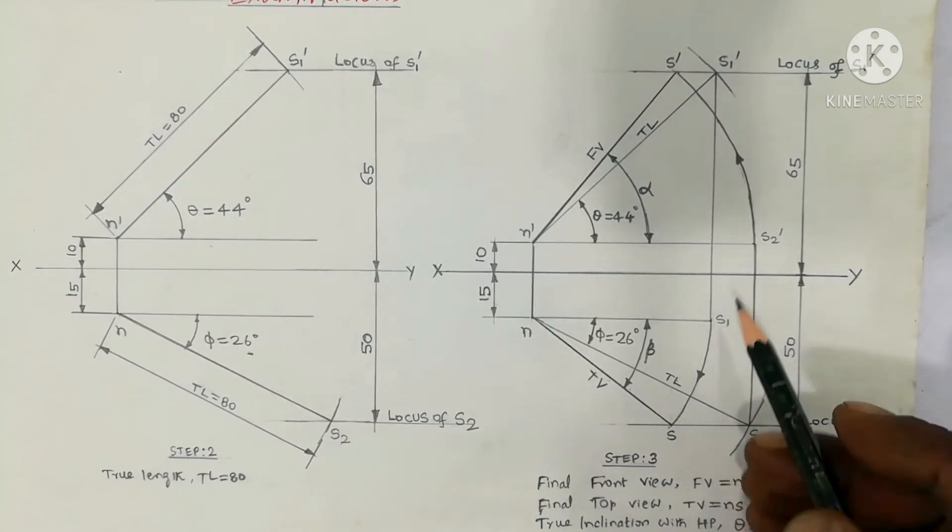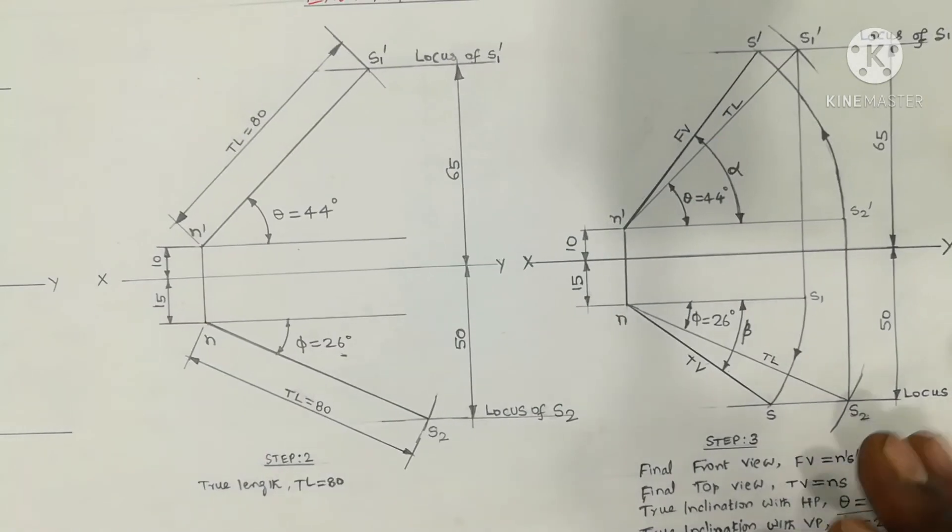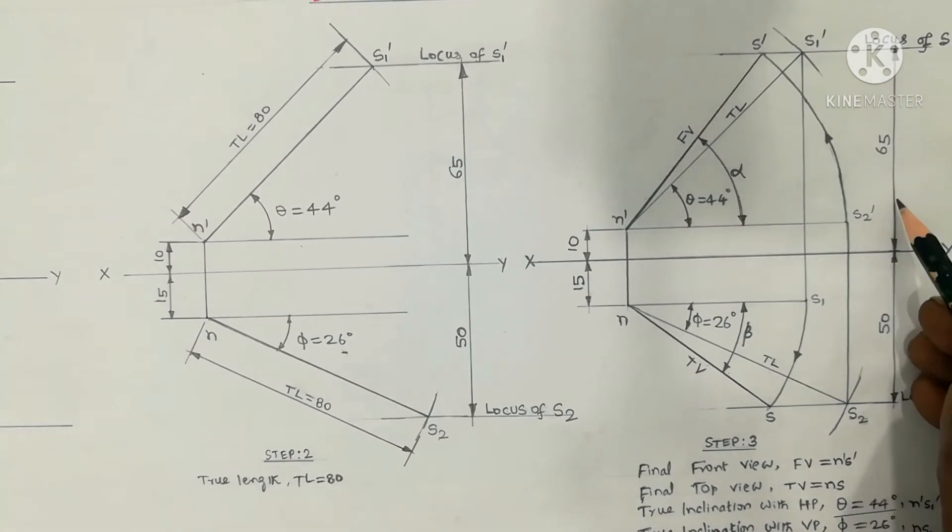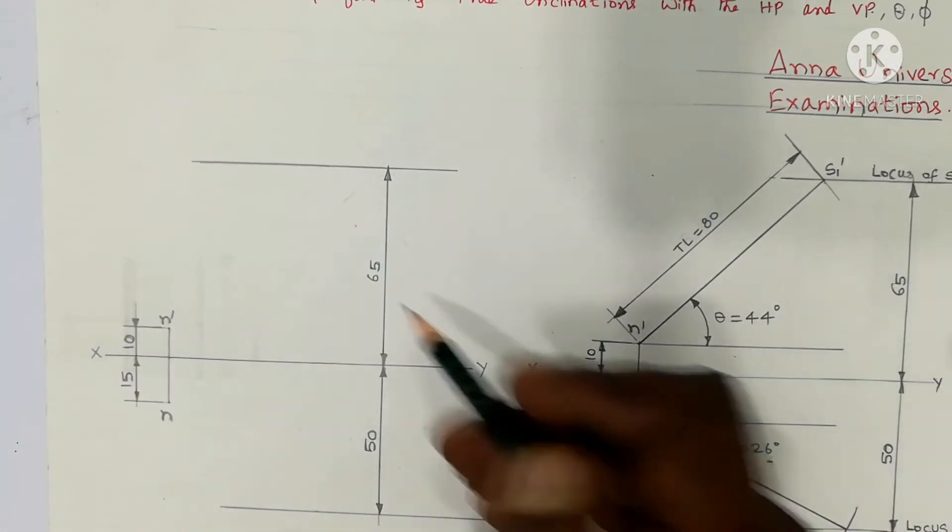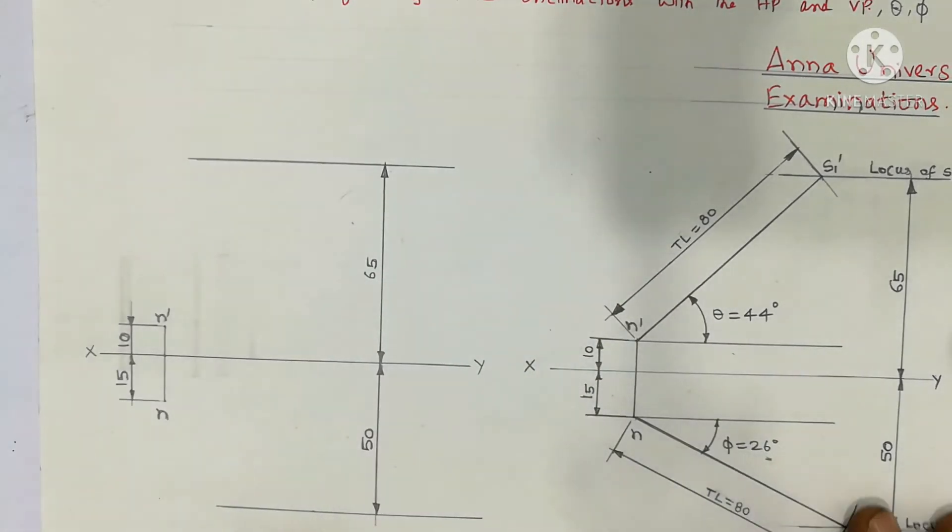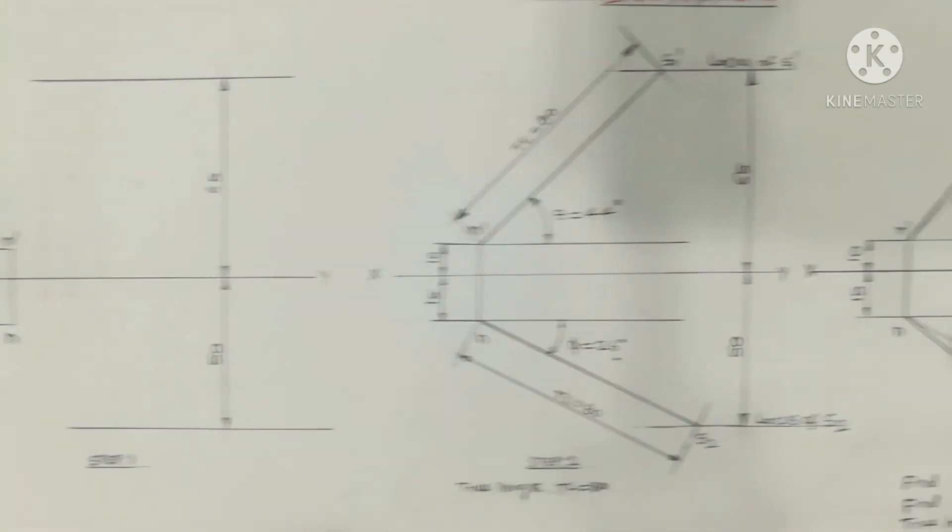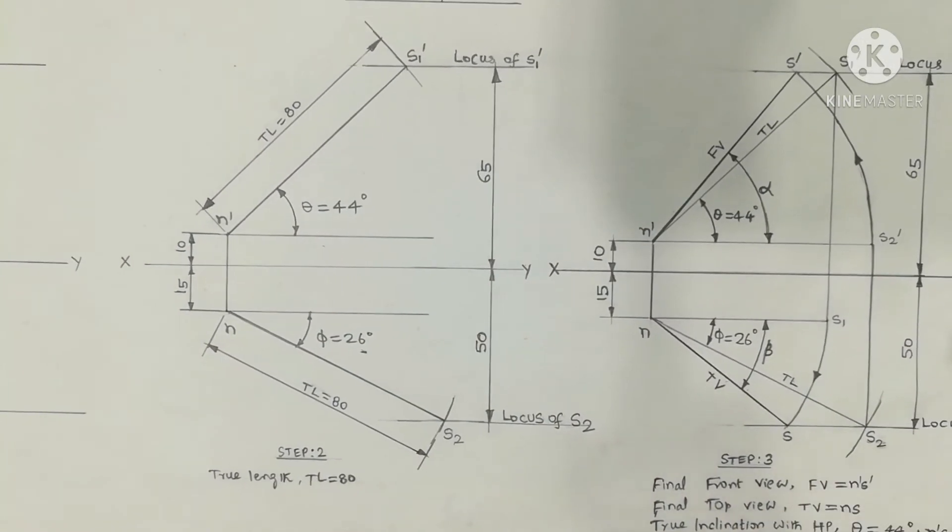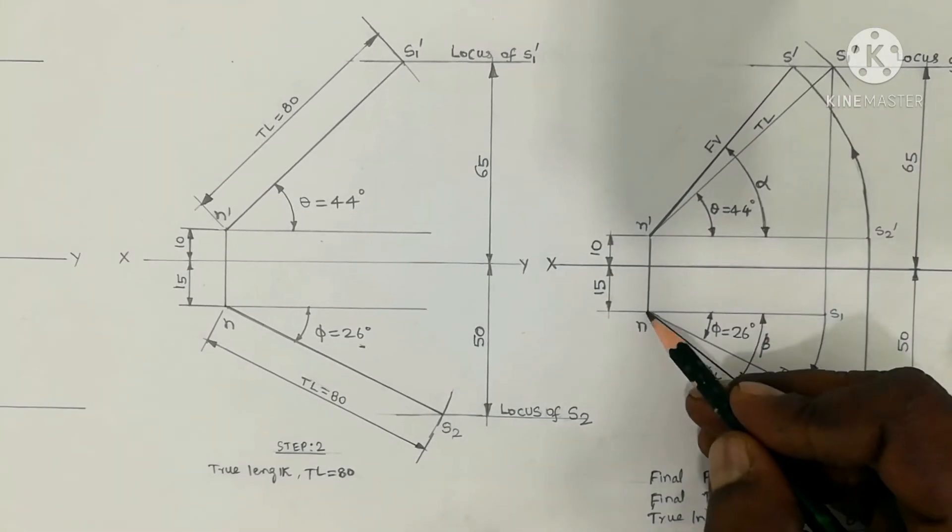So using compass in the final step, we are going to draw the final front view N dash S dash, and the final top view. N is complete.